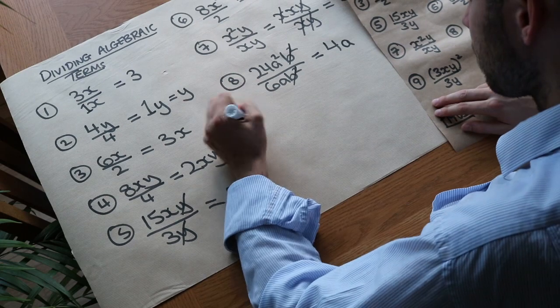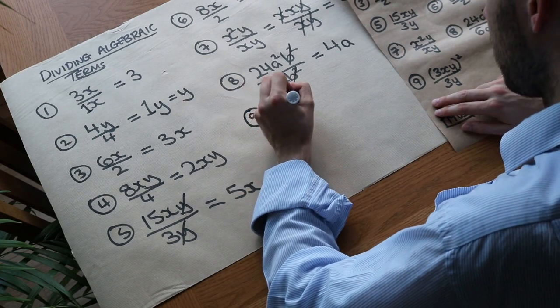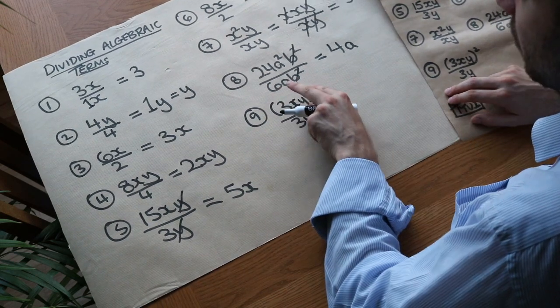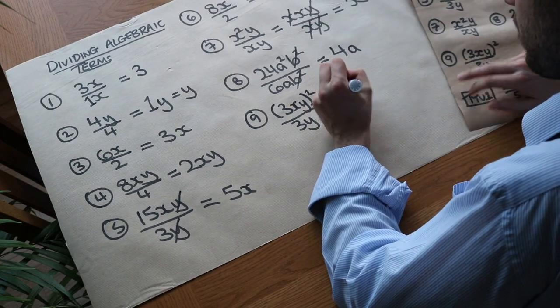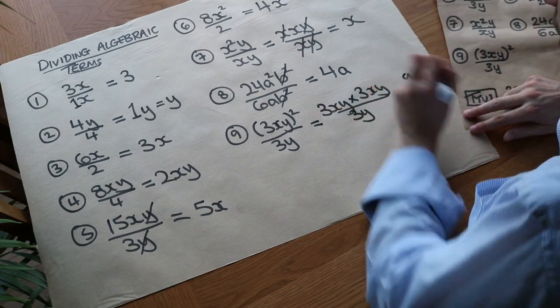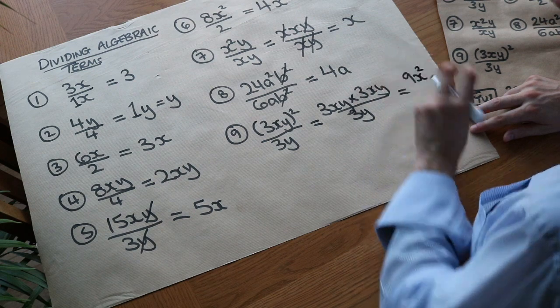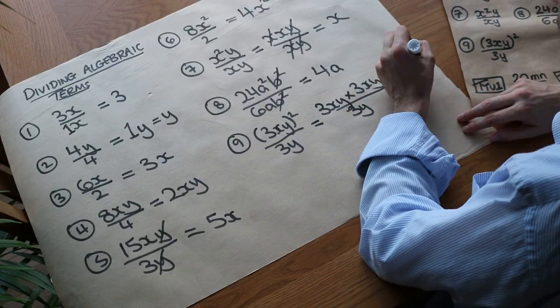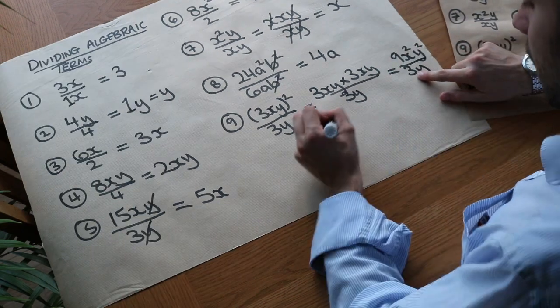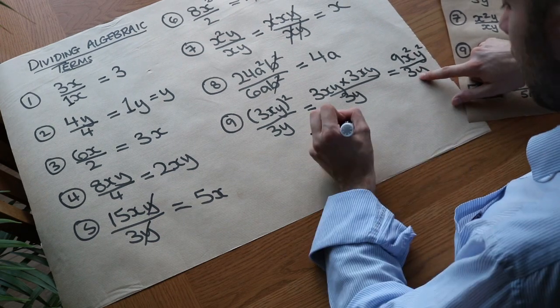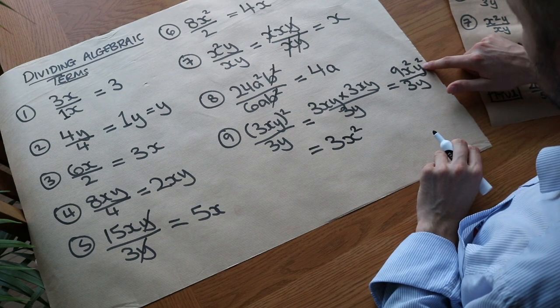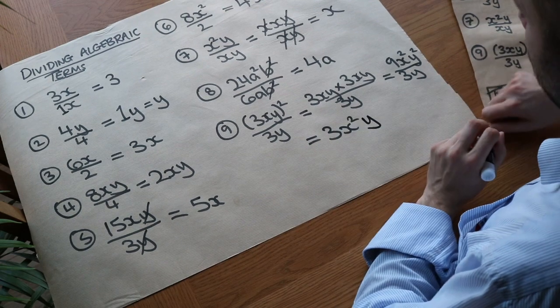What about 9? We've got 3xy squared over 3y. Now we need to multiply this out first. What 3xy squared means is 3xy times 3xy. So if we write it like that, that simplifies to, well, 3 times 3 is 9, x times x is x squared, and we saw this in a previous video on multiplying algebraic terms, y times y is y squared, and we're dividing it by 3y. So 9 divided by 3 is 3. x squared divided by, well, there's nothing there, so it stays as x squared. And then y squared divided by y, you could think of that as y times y, and dividing by one of those y's, that leaves a single y left.